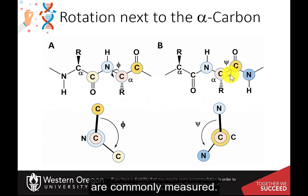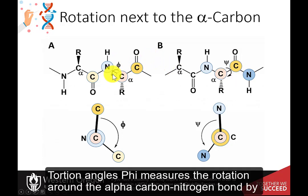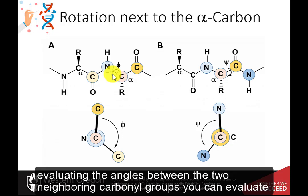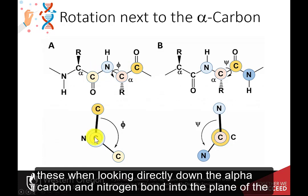Torsion angle phi measures the rotation around the alpha carbon-nitrogen bond by evaluating the angles between the two neighboring carbonyl groups. You can evaluate these when looking directly down the alpha carbon-nitrogen bond into the plane of the paper.